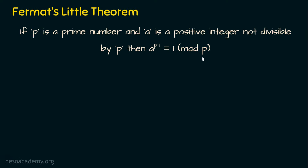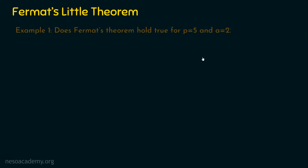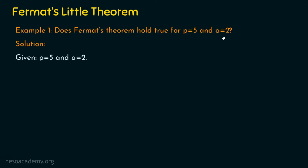Let's dive into Example 1. Does Fermat's Theorem hold true for p equal to five and a equal to two? We are required to check whether Fermat's Theorem holds true for these values. The given information is: p is equal to five and a is equal to two — so we have prime number five and positive integer two.